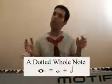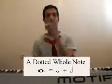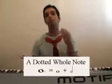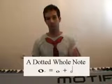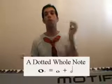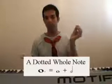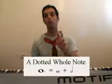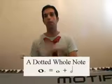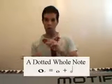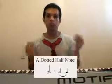So let's start. In the previous lessons we've learned that when we add a dot after a note, we add half as much again to the basic note duration. Let's take the whole note for example. A whole note is worth 4 beats. We add a dot after the note and we have to add 2 more beats because half of 4 is 2. 4 plus 2 is 6, so a dotted whole note is worth 6 beats.